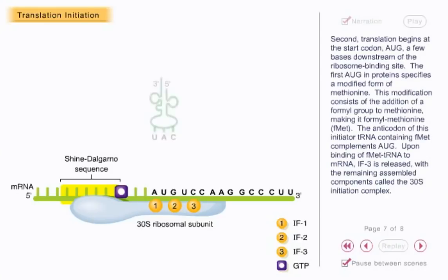Second, translation begins at the start codon, AUG, a few bases downstream of the ribosome binding site. The first AUG in proteins specifies a modified form of methionine. This modification consists of the addition of a formyl group to methionine, making it formyl methionine.